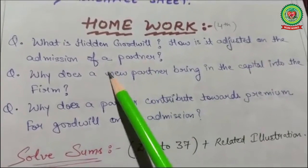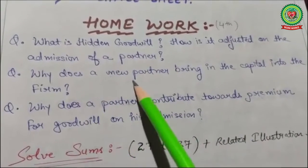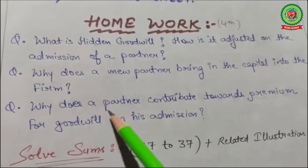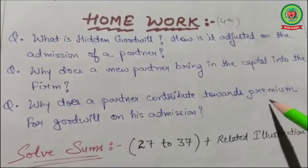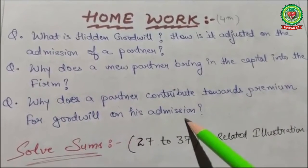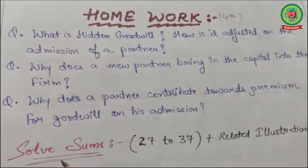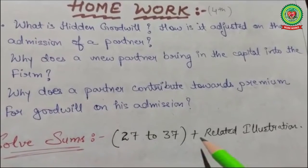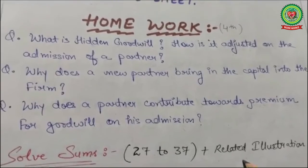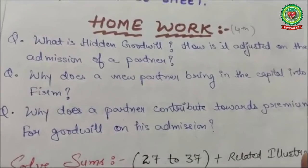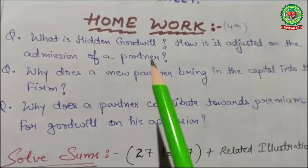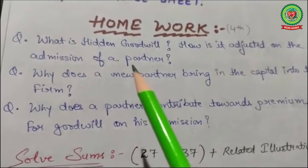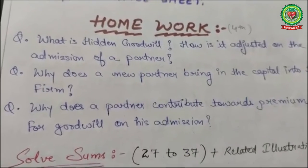Homework questions: What is hidden goodwill and how is it adjusted on admission of a partner? Why does a new partner bring capital into the firm? Why does a partner contribute towards premium for goodwill on his admission? Also solve sums 27 to 37 plus related illustrations. Along with your school links, watch the YouTube videos for better understanding.